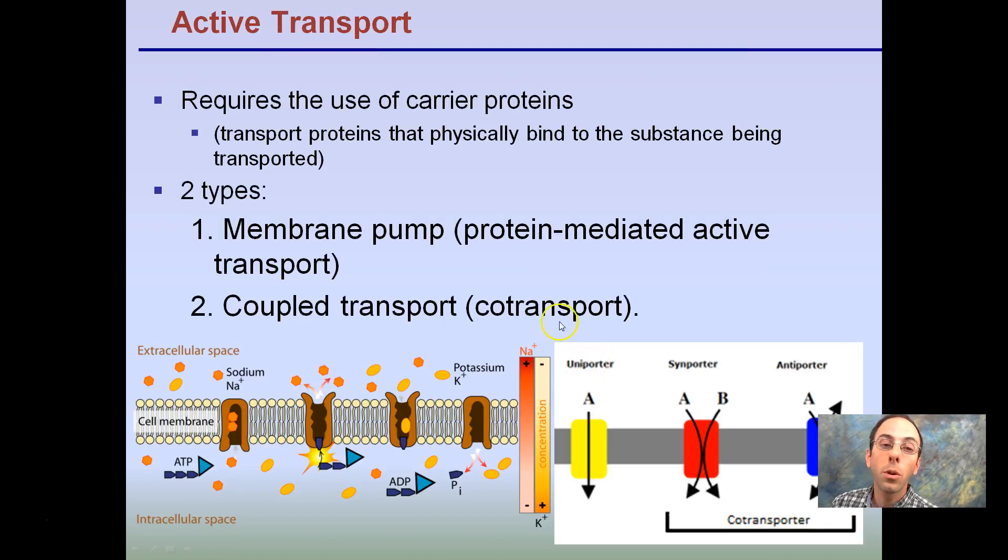Again, active transport requires the use of carrier proteins. There's two types: membrane pump or coupled transport. So membrane pump, when you see the word pump, think of a normal pump. It could be a water pump requiring electricity, requiring energy, it could be petroleum products. The key part here is requiring energy. And coupled transport, we're going to talk about our co-transport systems here.